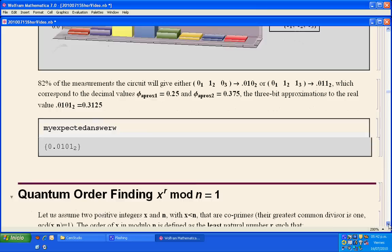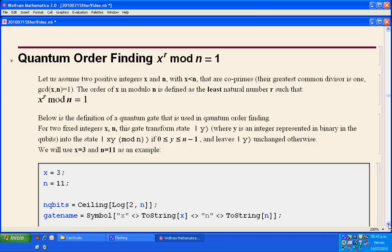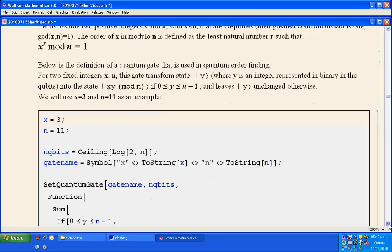Quantum order finding is an application of phase estimation in the equation x to the power r modulo n equal to 1. We want, for given x and n, the smallest value of r. For that, we use how to apply the phase estimation to a special type of gate. Here we have the definition of the gate.